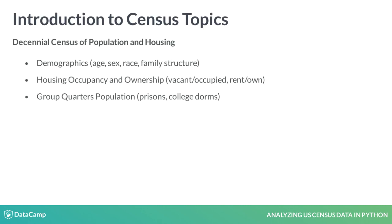The decennial census counts, as near as possible, all persons and housing in the United States. It covers demographic topics such as age and sex, and housing topics such as home ownership and persons per room. People living in group quarters are counted separately. Vacant housing units are also counted.